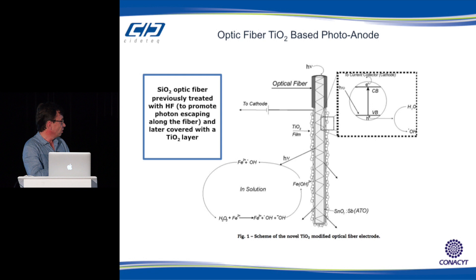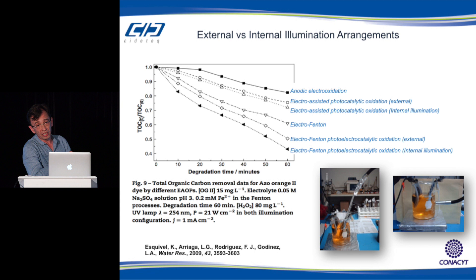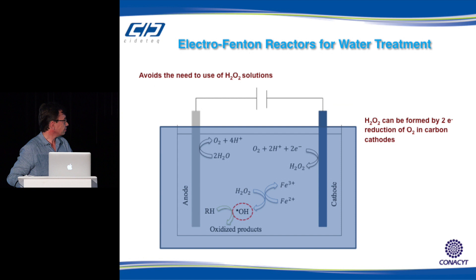This also allowed some UV light to escape to regenerate iron for the electro-Fenton reaction. We measured the effect of the number of titanium dioxide coatings and found that after five coatings we had maximum hydrogen peroxide production, whether illuminating from the internal or external part. Measuring total organic carbon concentration of a dye, we compared anodic electrooxidation, electro-assisted photocatalytic oxidation with external vs. internal illumination, and electro-Fenton. The best kinetics was obtained with internal illumination using our optic fiber.